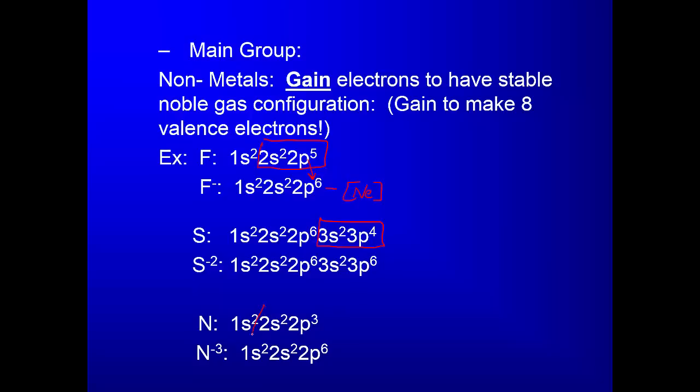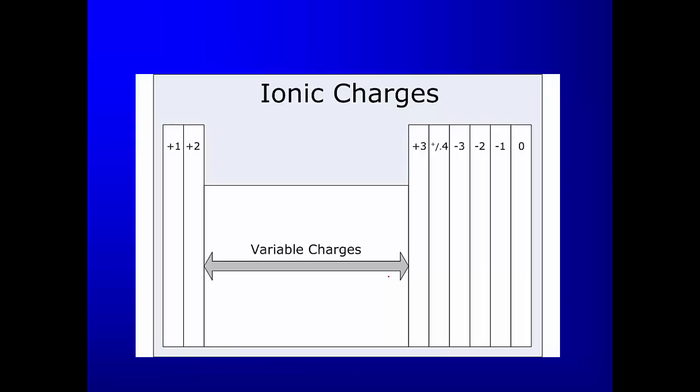Nitrogen: the last S and P are its valence electrons. It has five. It wants to have eight, so it's going to gain three. That's why it forms a negative three charge. This is why everything in the group all have the same charge, because they all have the same valence configuration.